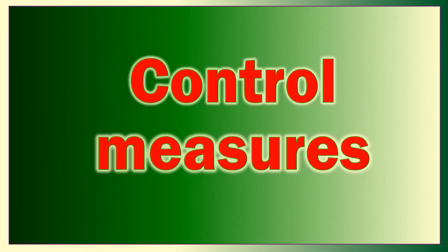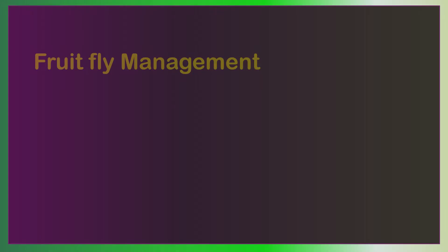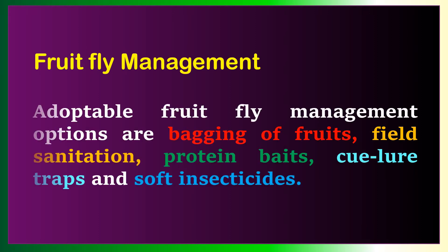Control measures. Adaptable fruit fly management options are bagging of fruits, field sanitation, protein baits, cue-lure traps, and soft insecticides.